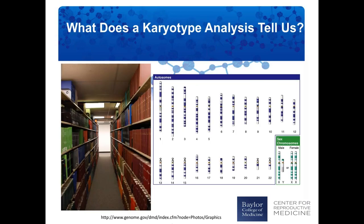What does this information tell us from a karyotype? Essentially, it's analogous to going to the library and looking at the Encyclopedia Britannica — we can see that all of the volumes are present and are about the right size. Similarly, a karyotype tells us that all chromosomes are present, approximately the right size, and we can even see when fairly large pieces of chromosomes are translocated or missing. We can also see whether it's a male or female by looking at the sex chromosomes, the X and the Y, but this is a very superficial look at our genetic information.